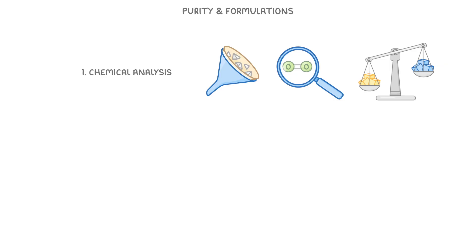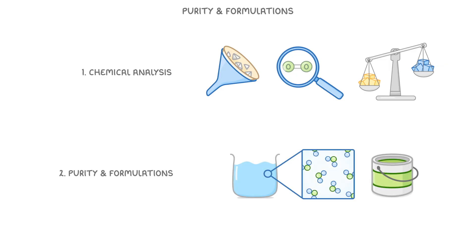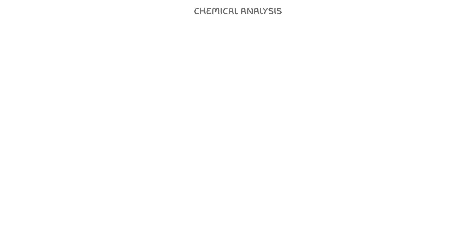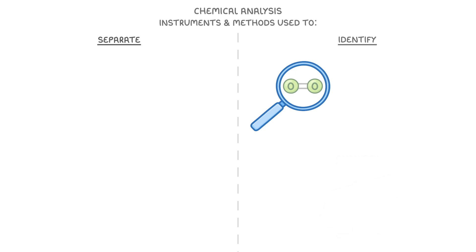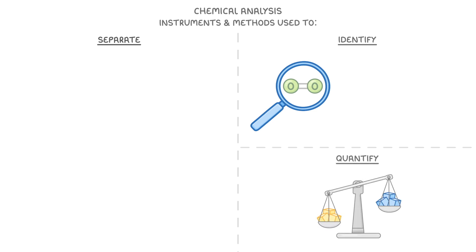In today's video, we're going to introduce the field of chemical analysis and explain what's meant by the terms purity and formulations. Chemical analysis, which is also known as analytical chemistry, is all about the instruments and methods that we use to separate, identify, and quantify different substances.